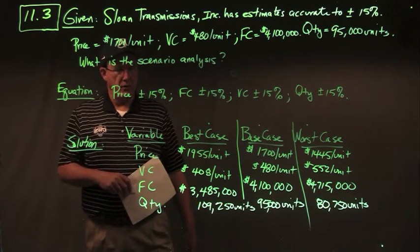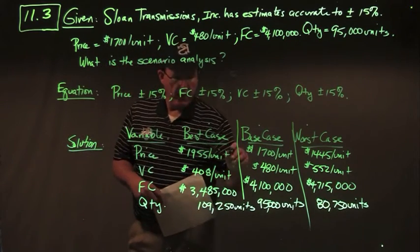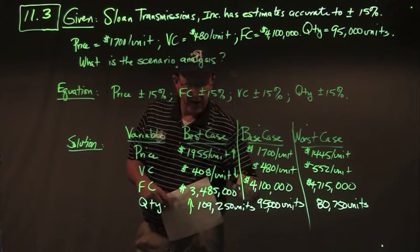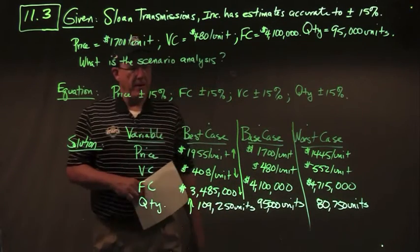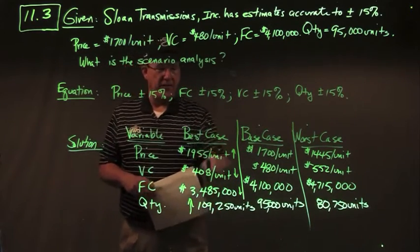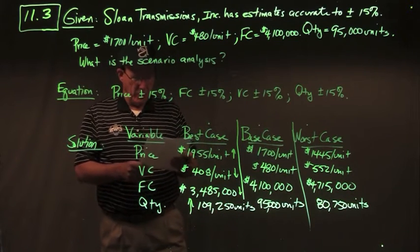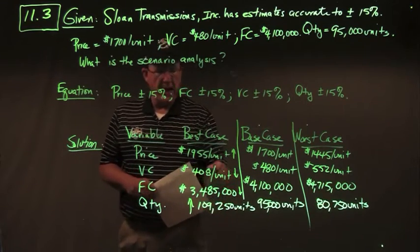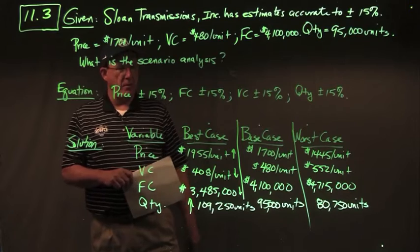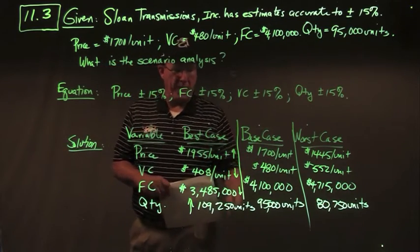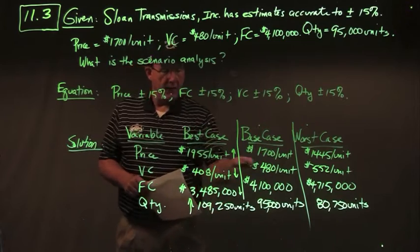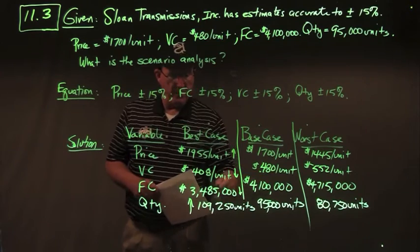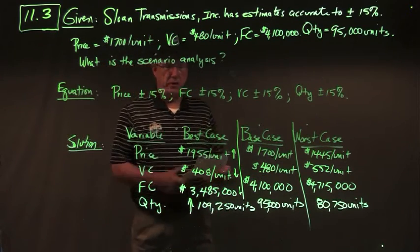In the best case, price and quantity go up and costs go down. Multiplying by 1.15: price goes to $1,955 per unit and quantity to 109,250 units — both up 15%. Multiplying base costs by 0.85: variable cost goes down from $480 to $408, and fixed cost goes from $4.1 million to $3,485,000.